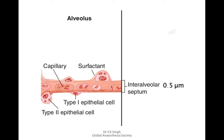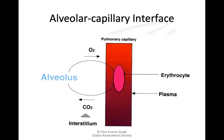This constitutes the ventilation-perfusion interface, which is present between the lungs and the circulation. It is very thin — only around 0.5 micrometers thick. At this alveolar-capillary interface, hemoglobin carries carbon dioxide and releases it at the alveoli.